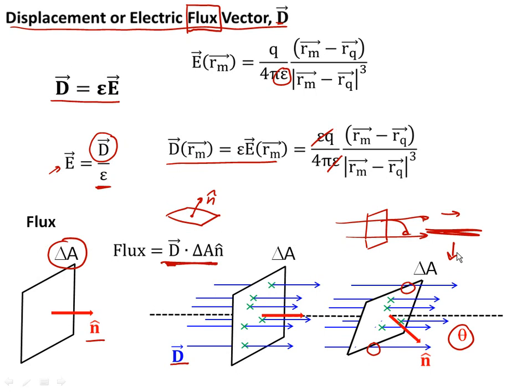In short, we define our flux by a flux field — in this case D, though we could also use E — dotted with a surface of area delta A and direction defined by the normal N. The flux vector dotted with the normal times the area gives the total flux through a surface. Despite this mathematical aside defining flux, this is still somewhat unsatisfying because we've defined a whole new term and it's not yet clear why we need it.